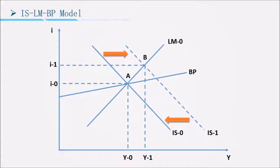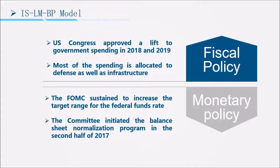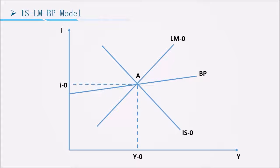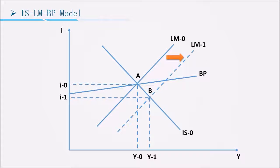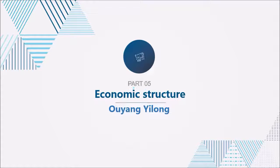Therefore, the fiscal policy is completely ineffective. For monetary policy, the FOMC continued to increase the target range for the federal funds rate. This will shift the LM curve to the right, causing capital outflow and a BOP deficit. In addition, the interest rate falls and exchange rate rises, increasing net exports and shifting the IS curve to the right. Therefore, the monetary policy is effective.